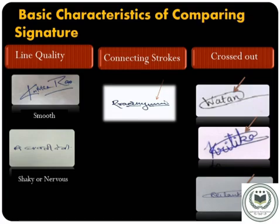Line quality is the thickness, strength, and flow of the letters. Some factors are whether the letters are flowing, shaky, or very thick. In the first picture, the line quality of the signature is very smooth. The second picture shows that while writing, the author becomes nervous, so the words and letters show shaky and nervous characteristics.